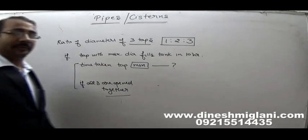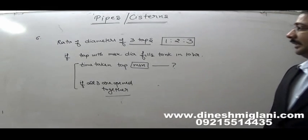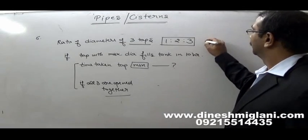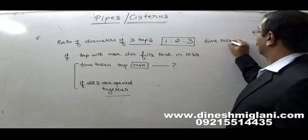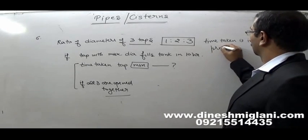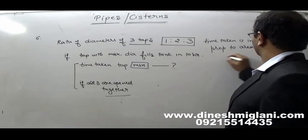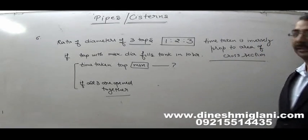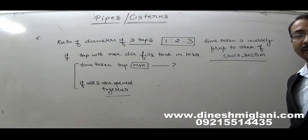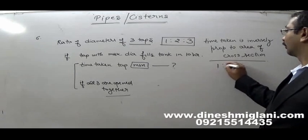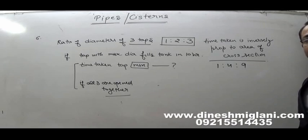If the ratio of diameters is 1:2:3, then the ratio of areas of cross section is 1²:2²:3² = 1:4:9. Since time taken is inversely proportional to area of cross section, the ratio of times taken is inversely 1:4:9.